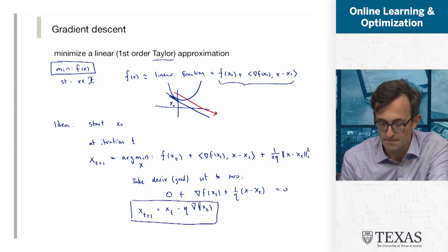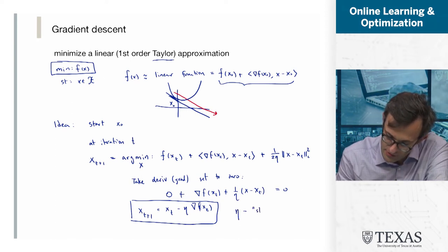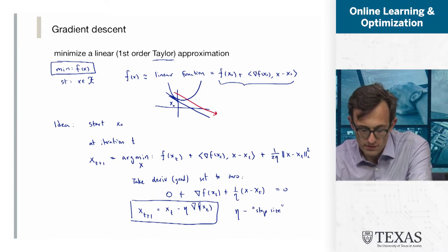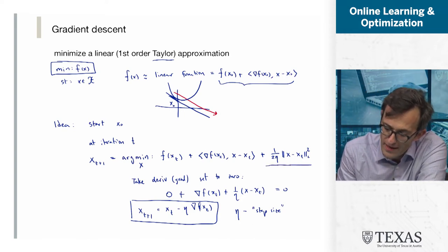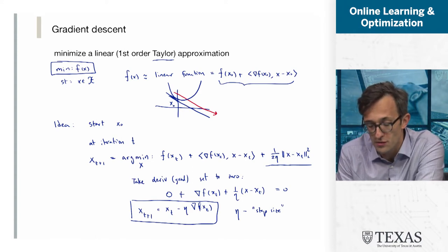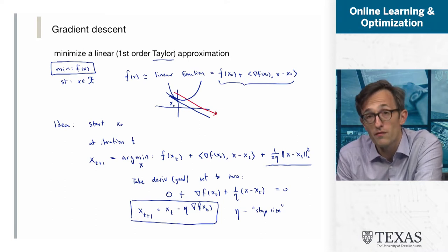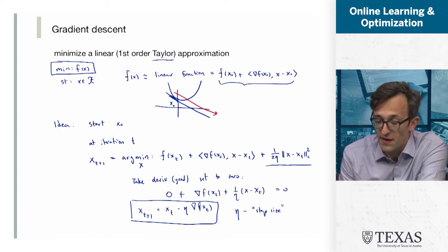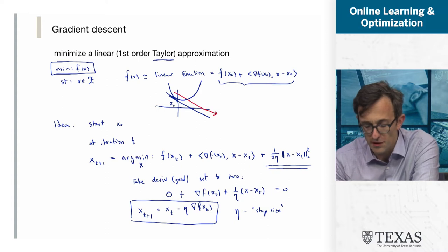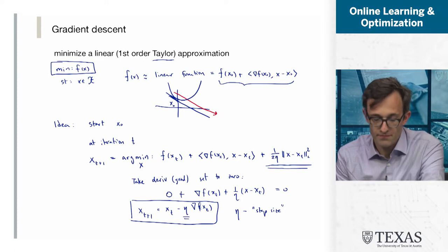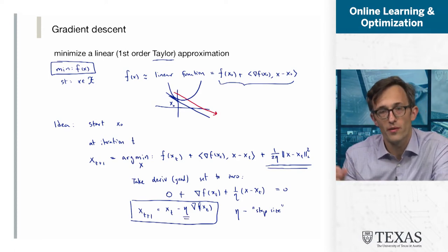What about this parameter η? Eta is what's called the step size. When η is very small, you don't take much of a big step — the constant in front of the quadratic becomes very large, so you're told to find the minimum but really don't go very far at all. When η is very big, this value becomes small and therefore you take a larger step size. This is the gradient descent algorithm, and one way to think about where it comes from.